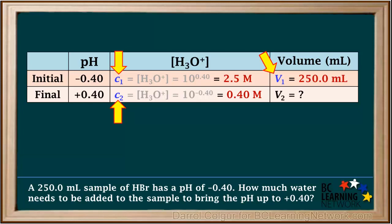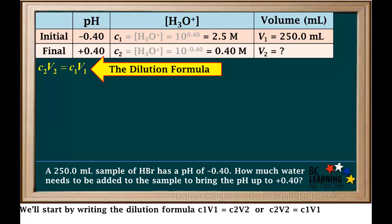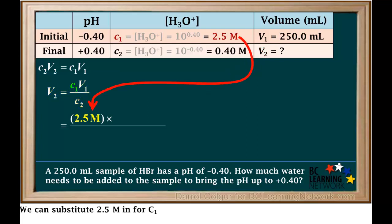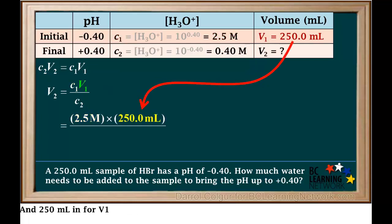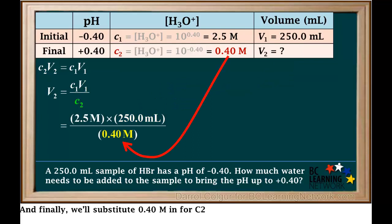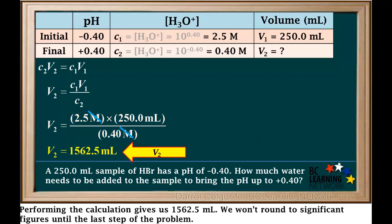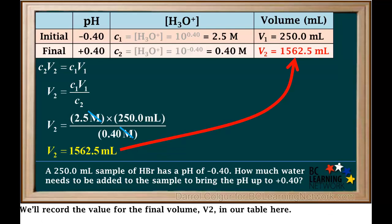We now have the values for C1, C2, and V1. With the dilution calculation, we can find the value for the final volume V2. We'll start by writing the dilution formula C1V1 = C2V2, rearranged to solve for V2: V2 = C1V1 / C2. Substituting 2.5 molar for C1, 250 milliliters for V1, and 0.40 molar for C2, we cancel out the unit molarity. Performing the calculation gives us 1562.5 milliliters. We won't round to significant figures until the last step.